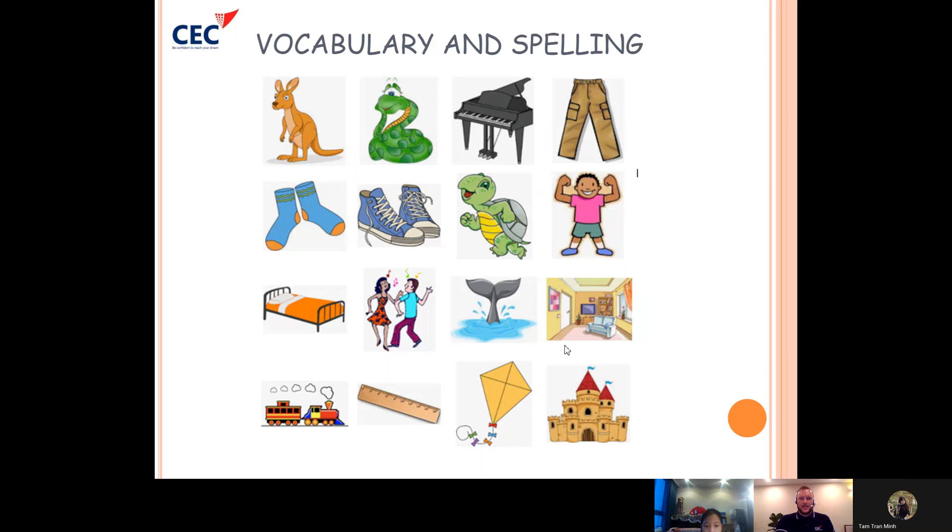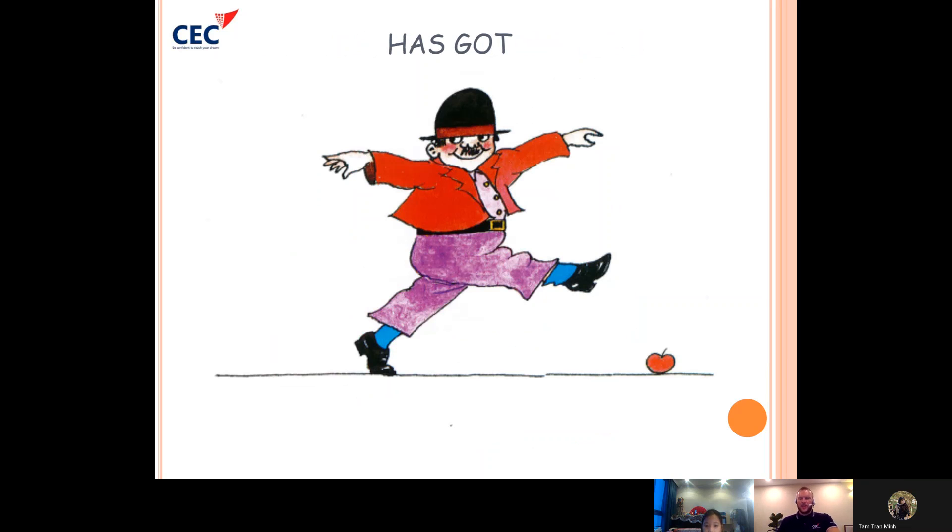And what is this? It's a tail. Tail, it's a tail. Can you spell tail? T-E-A... T-A... T-I... I double L. Just one L, just one L.